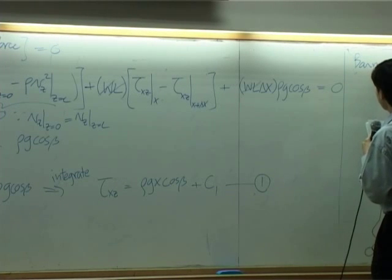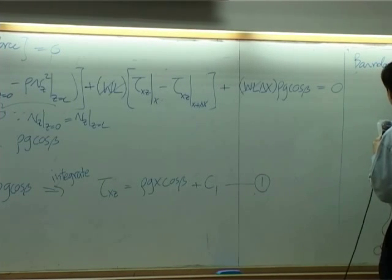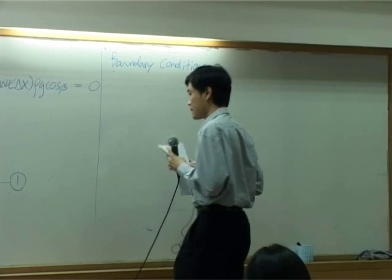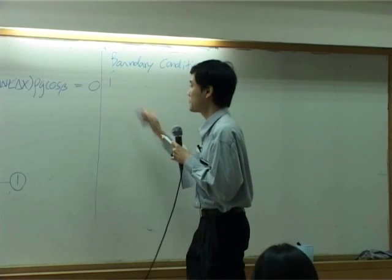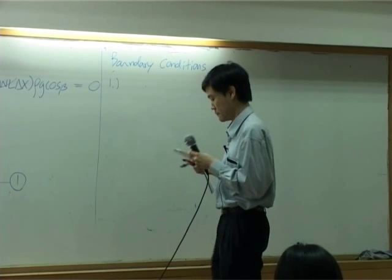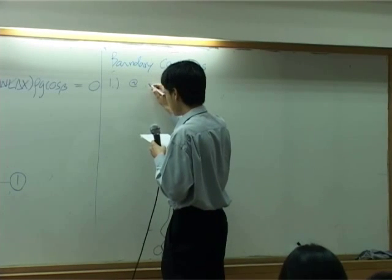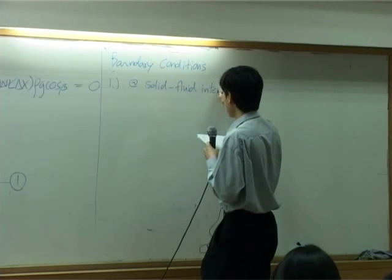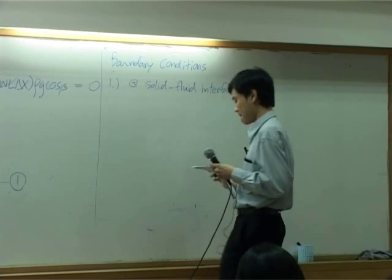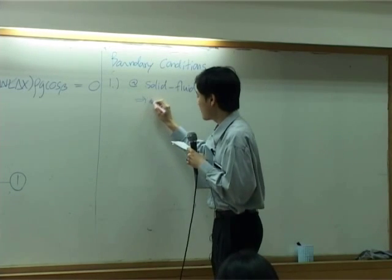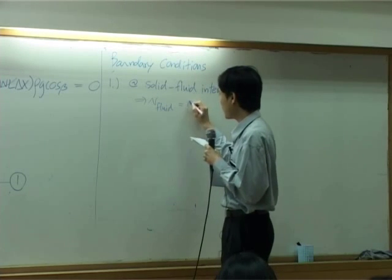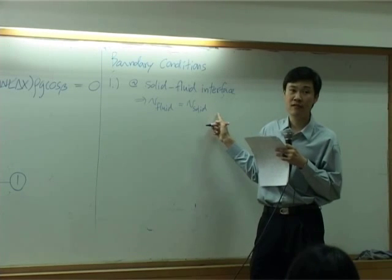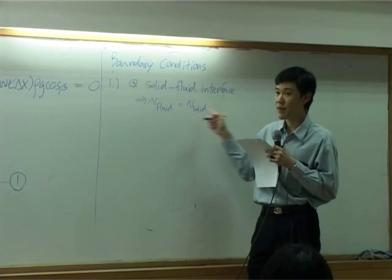I'm going to say boundary condition. The first one, which is usually found at solid-fluid interface, you will get V fluid equal to V of solid. This one is called no-slip condition. We already mentioned this before.